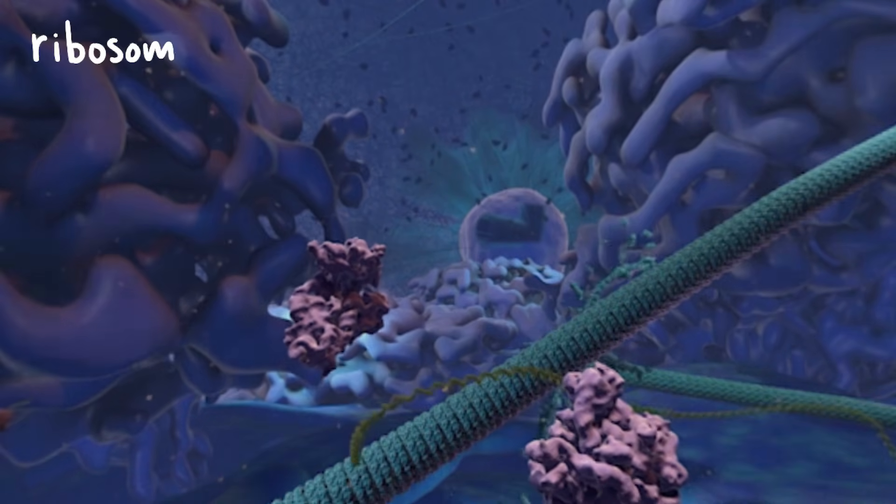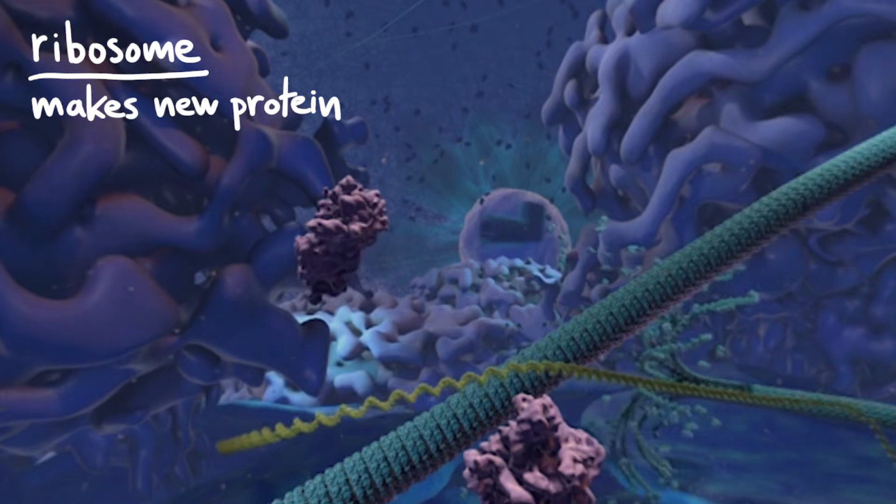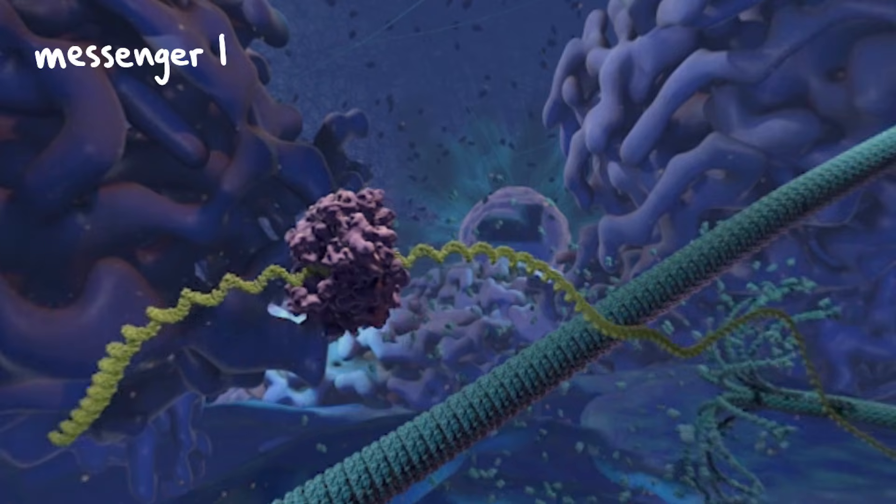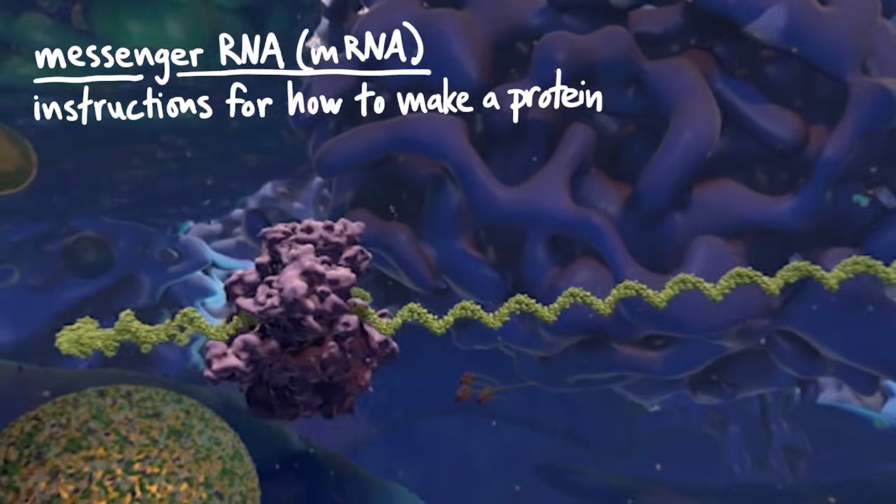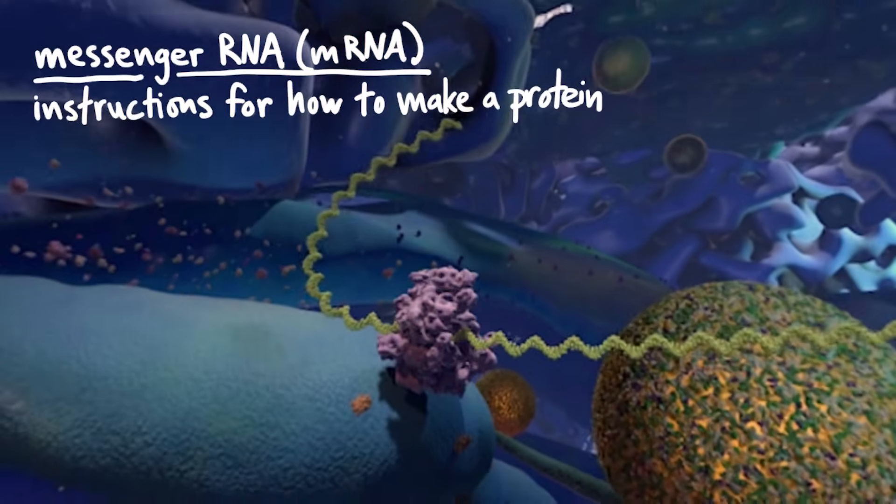These here are parts of a ribosome, which makes protein. You'll see a yellow chain float up. This is a strand of messenger RNA, or mRNA, and it carries instructions for how to make a protein. The two parts of the ribosome come together around the mRNA.